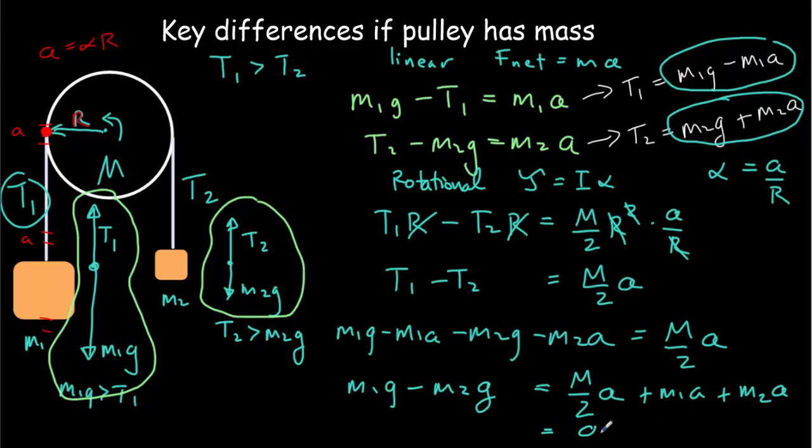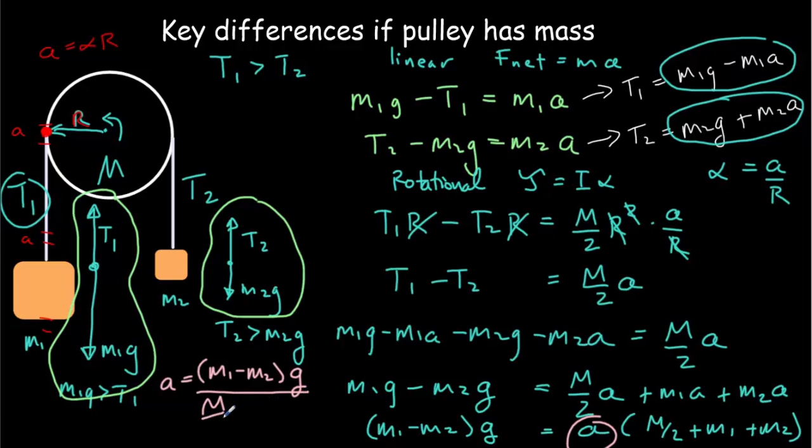And left on this side of the equation would be M1g minus M2g. Common factor out the A and common factor the g. We end up with this expression.